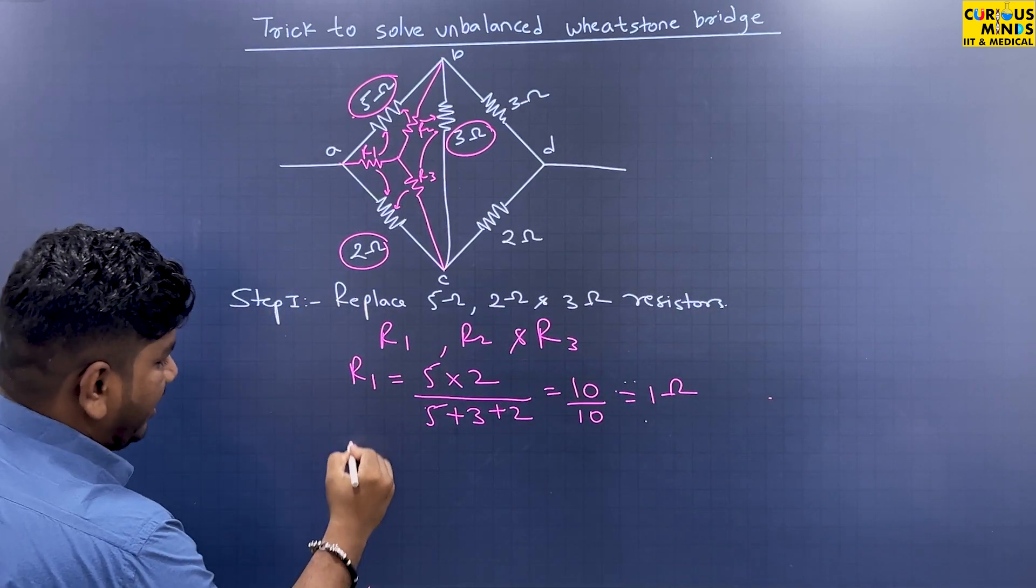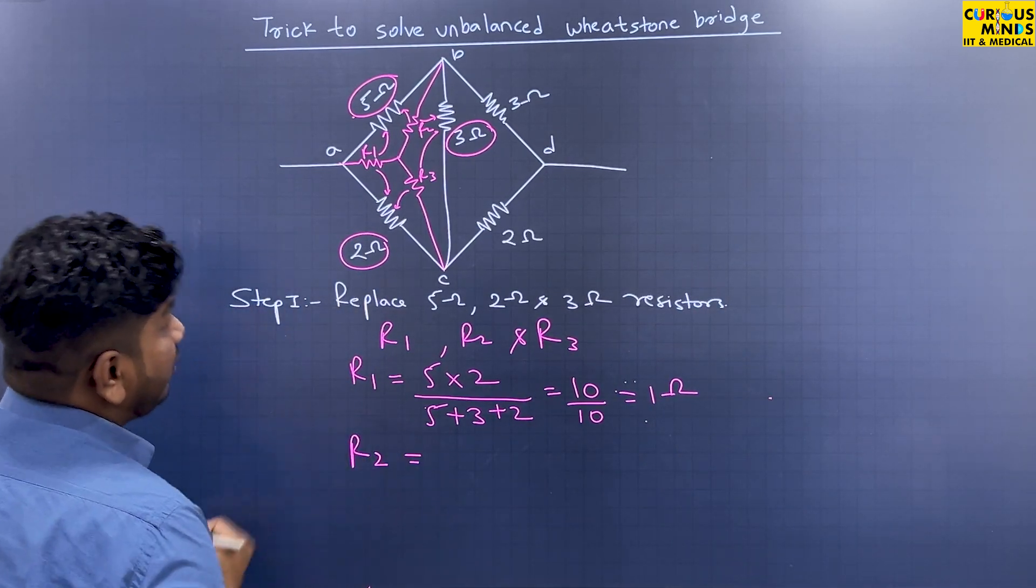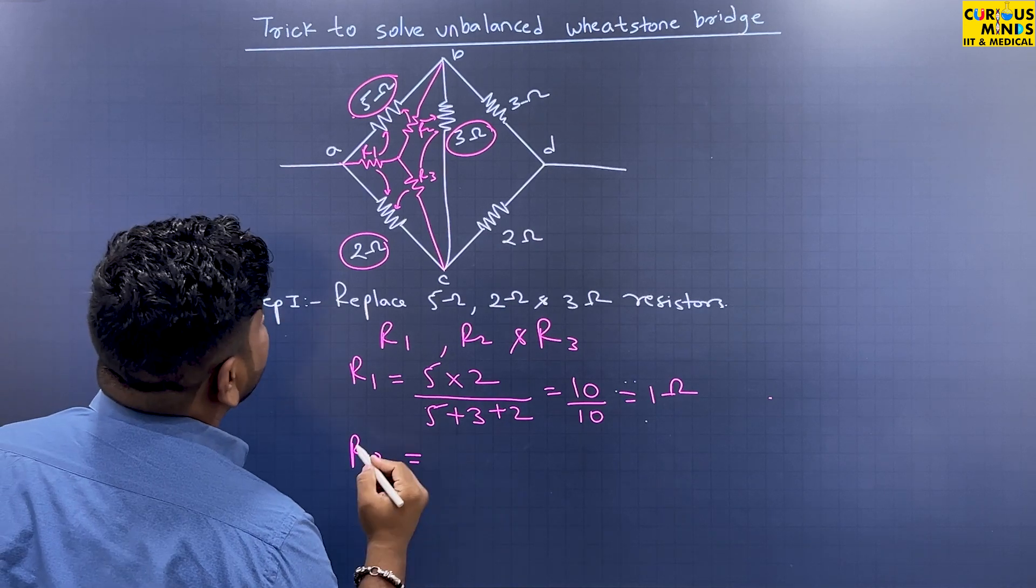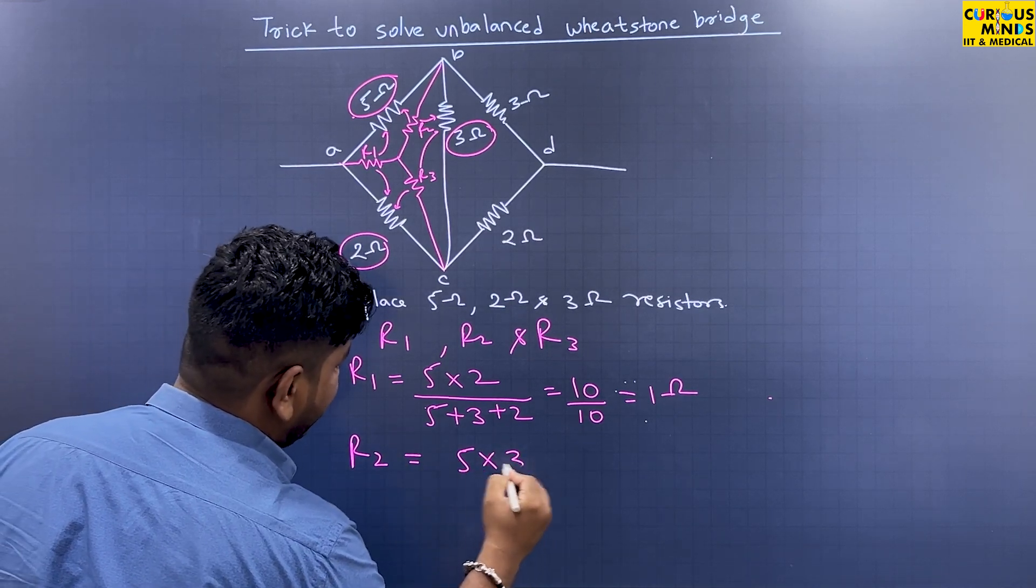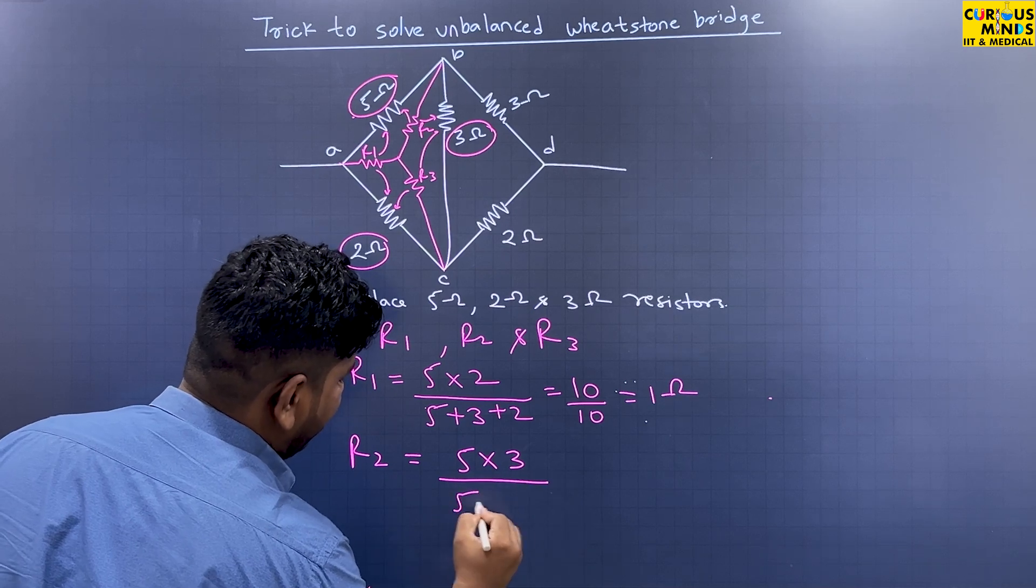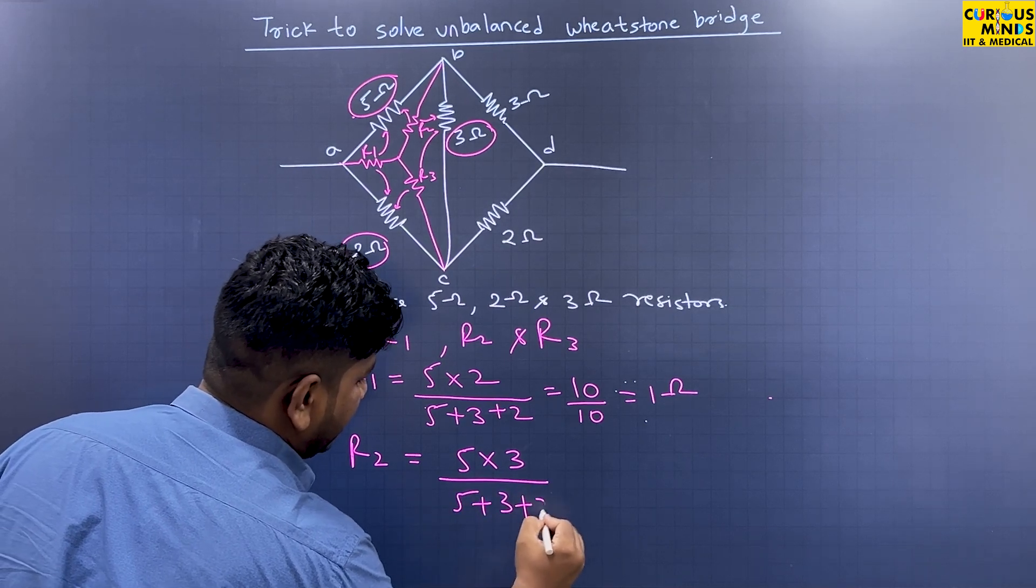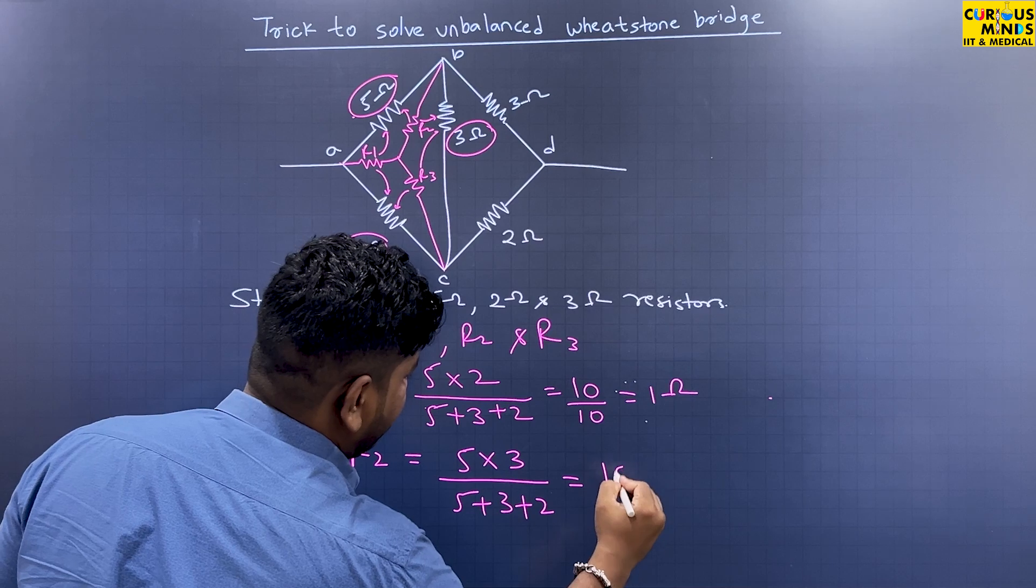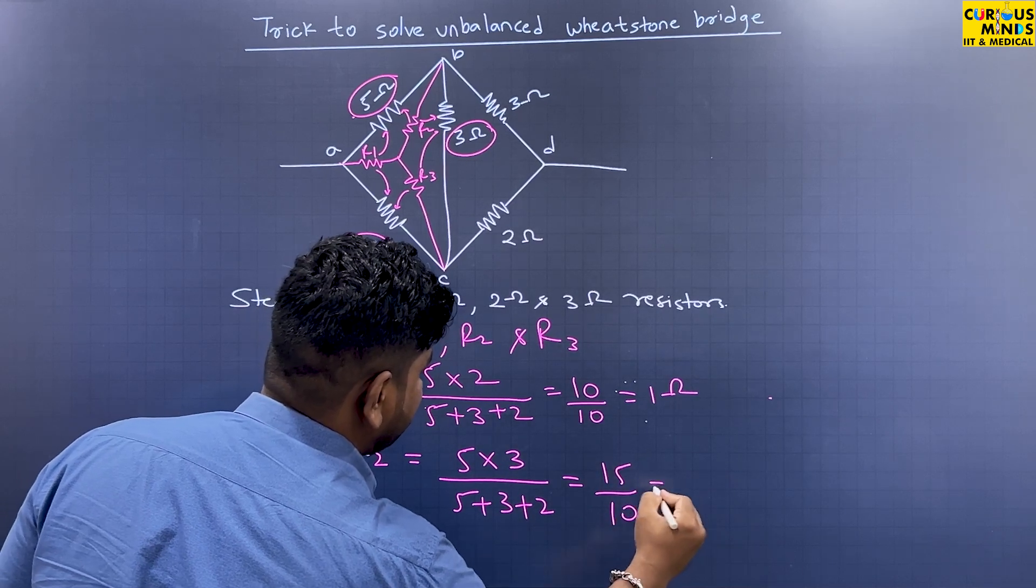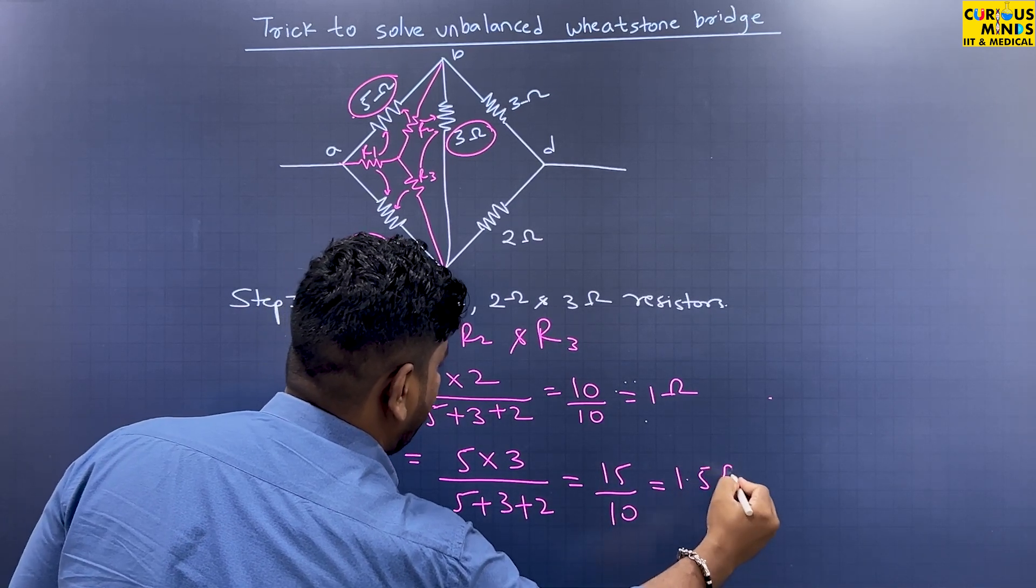Let's calculate R2 over here. R2's neighboring resistances are 5 and 3. So it is 5 into 3 upon 5 plus 3 plus 2, which is 15 upon 10, which is 1.5 ohms.